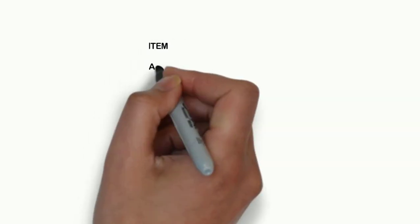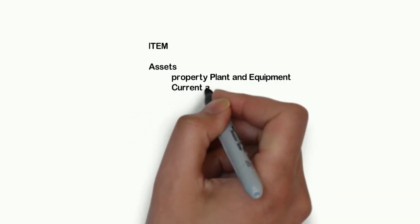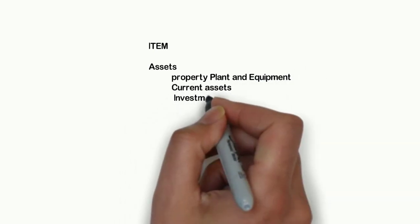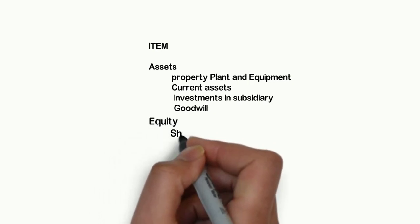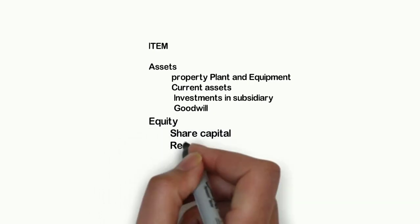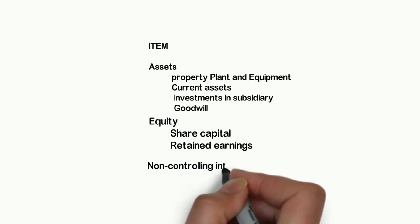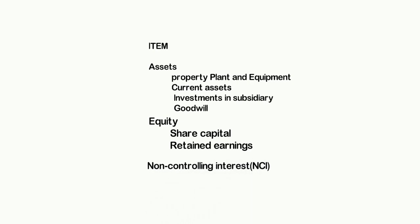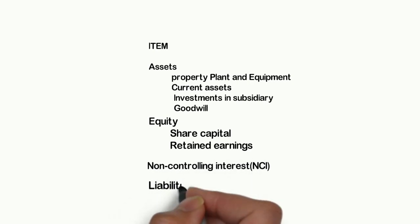Under assets we have: property, plant and equipment; current assets; investments; and goodwill. Under equity we have share capital and retained earnings, then non-controlling interest. Under liabilities we have current liabilities and non-current liabilities.